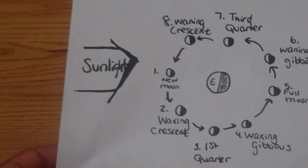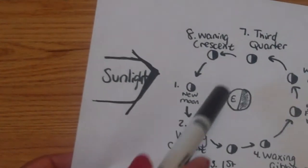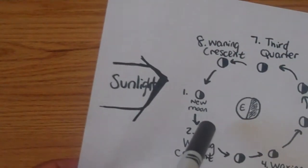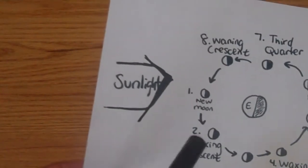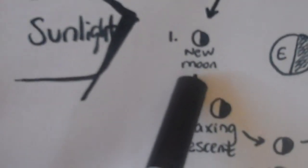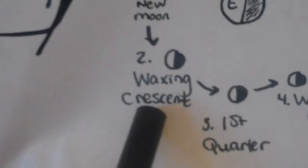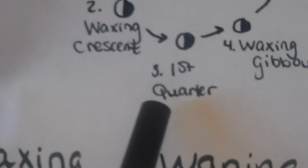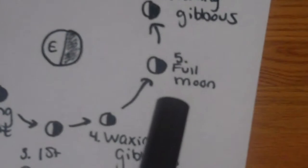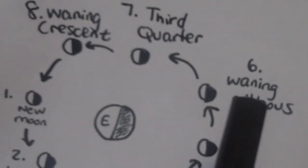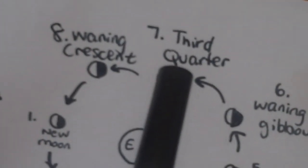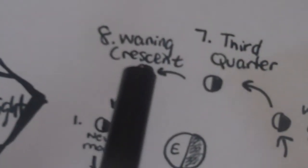First of all, you'll notice the Earth is in the middle. The moon is going around counterclockwise. I have numbered each phase, one through eight, and we're going to briefly go through the names. Here we have one, new moon; two, waxing crescent; three, the first quarter; four, coming around the side of the circle, waxing gibbous; five, the full moon—it's the opposite side of the new moon. Then you have six, waning gibbous; seven, third quarter; and then eight, waning crescent.